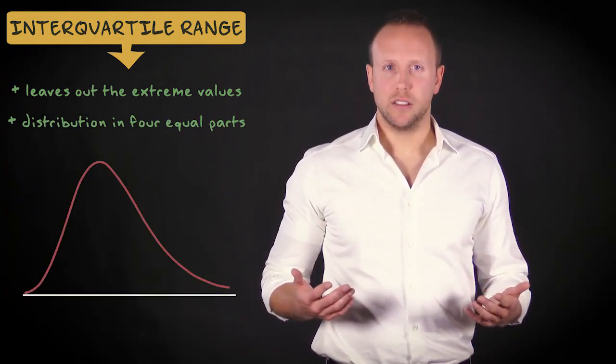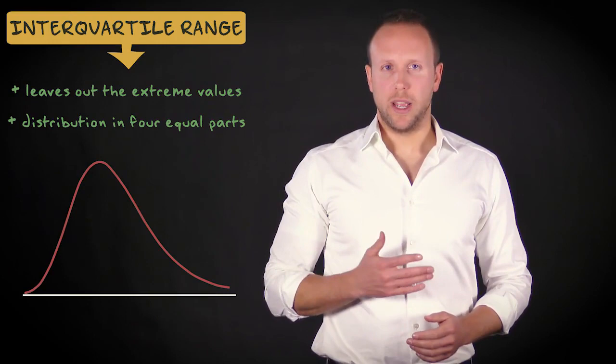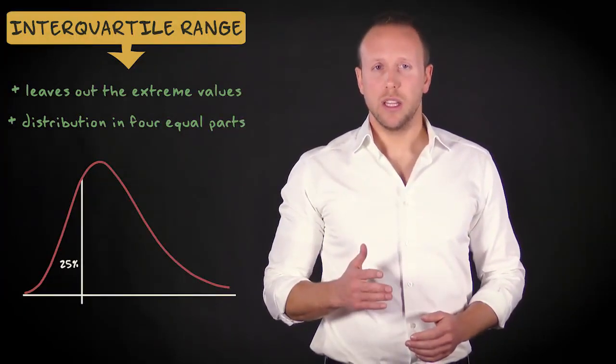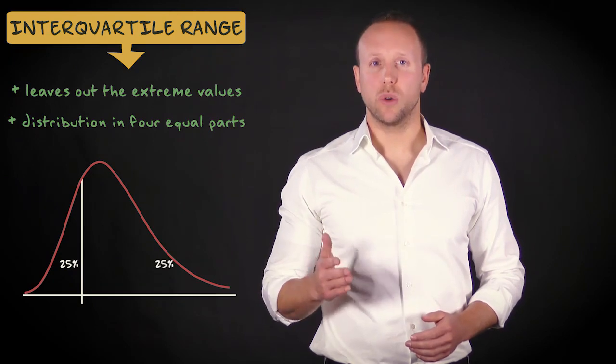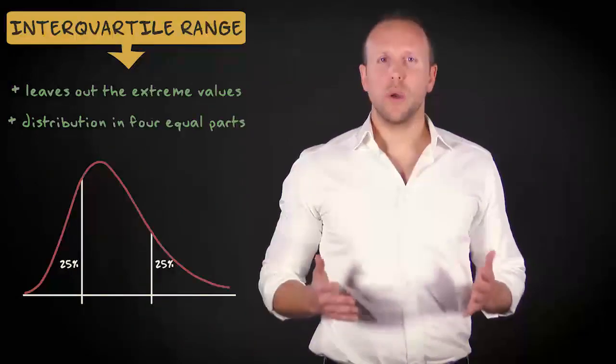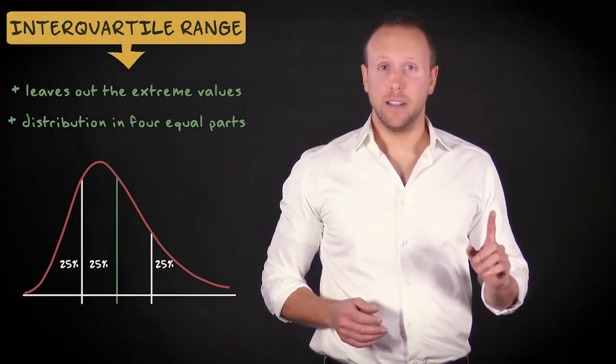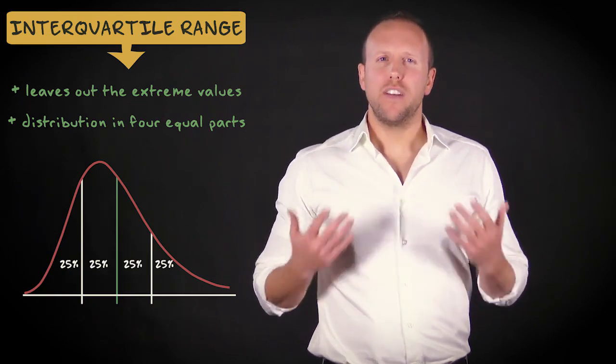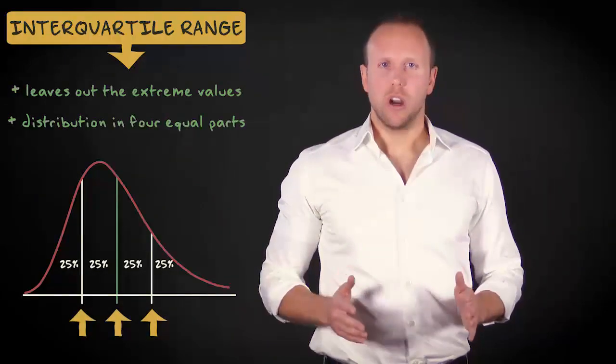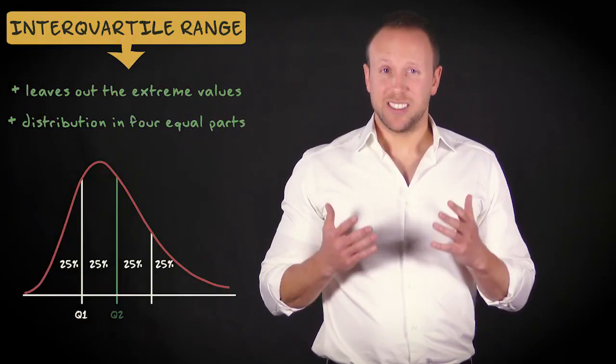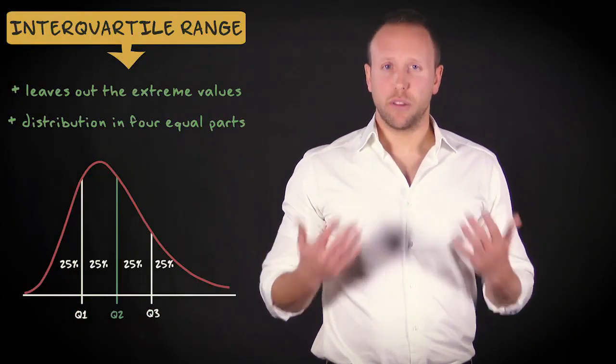you divide the scores in such a way that the 25% of your lowest scores are below this value, and the 25% of your highest scores are above this value. We also have 25% of our scores here, and 25% of our scores here. The values that now divide the distribution are called quartiles. This is the first quartile, this is the second quartile, and this is the third quartile.